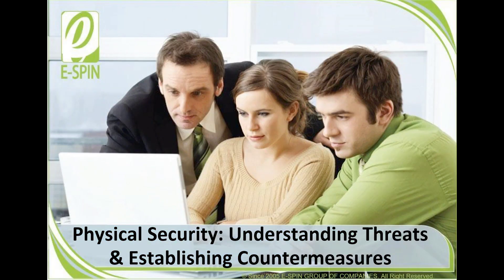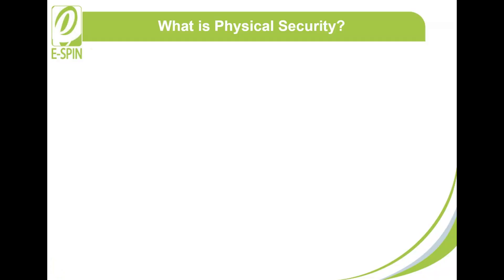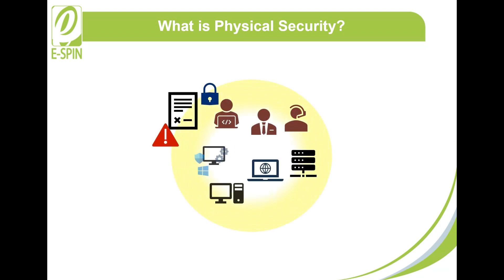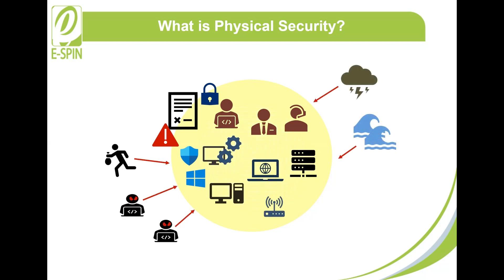Physical Security: Understanding Threats and Establishing Countermeasures. Physical Security refers to the measures and precautions put in place to protect personnel, hardware, software, and networks from physical events that could potentially harm enterprises.